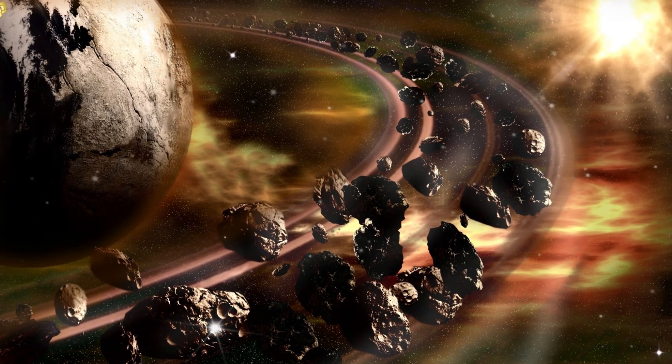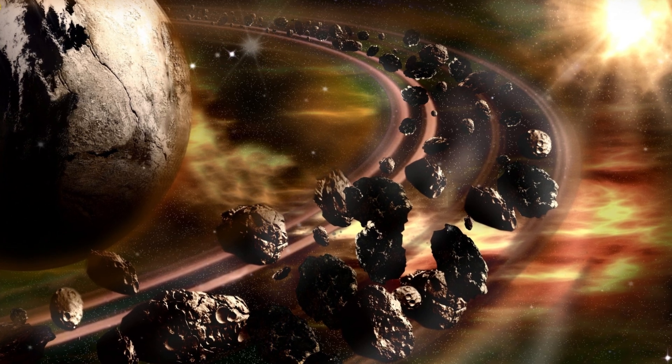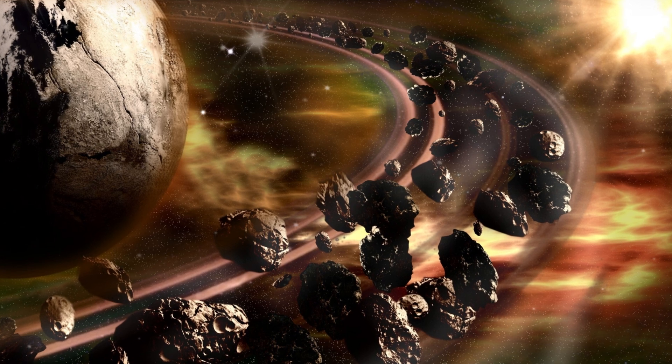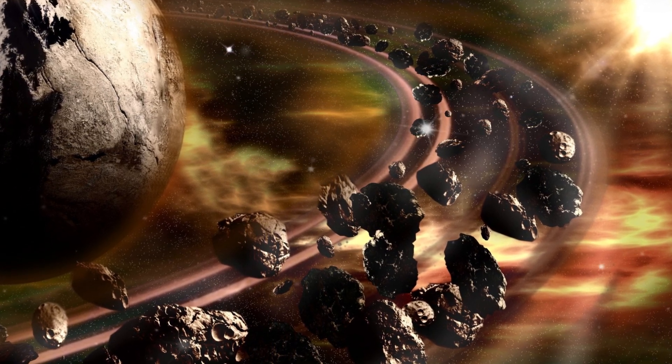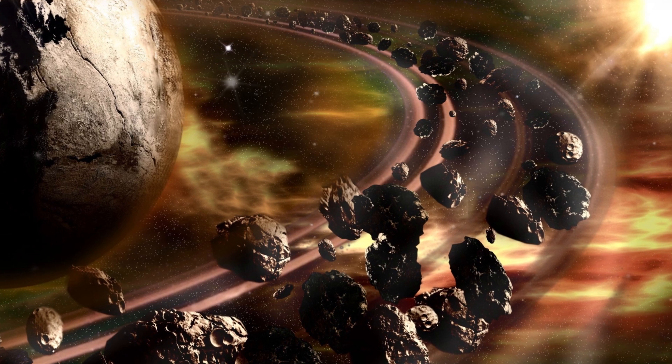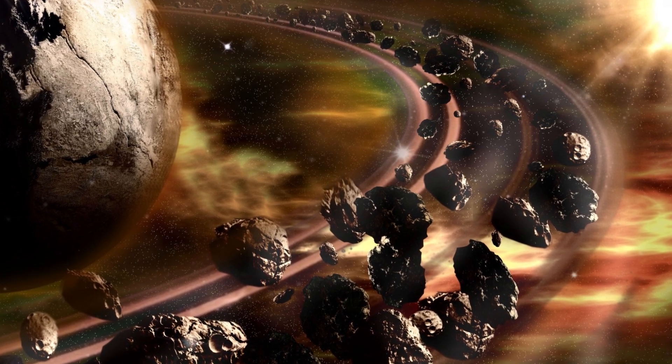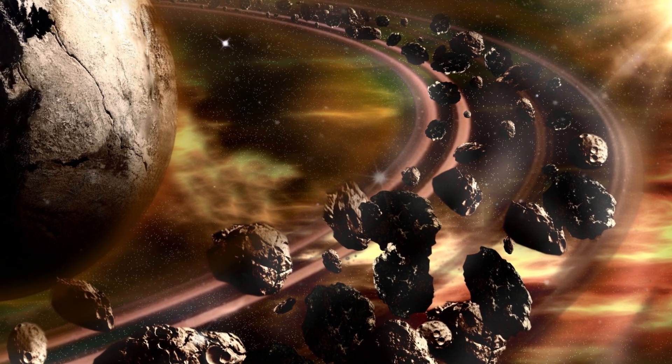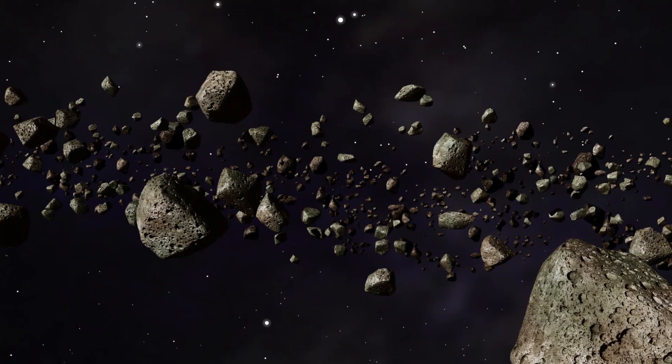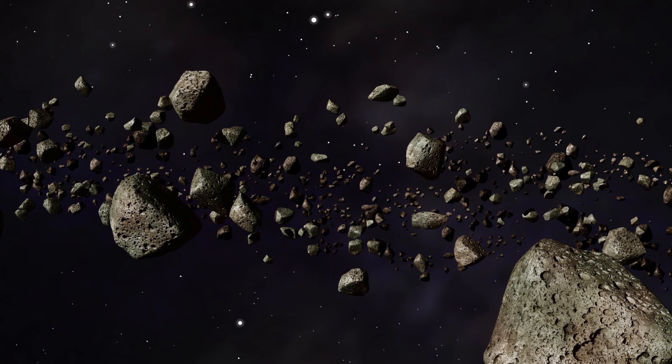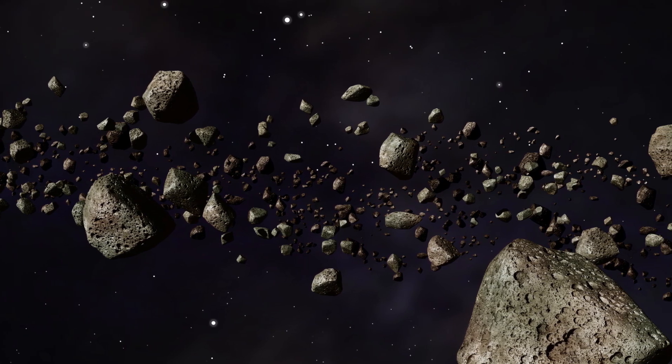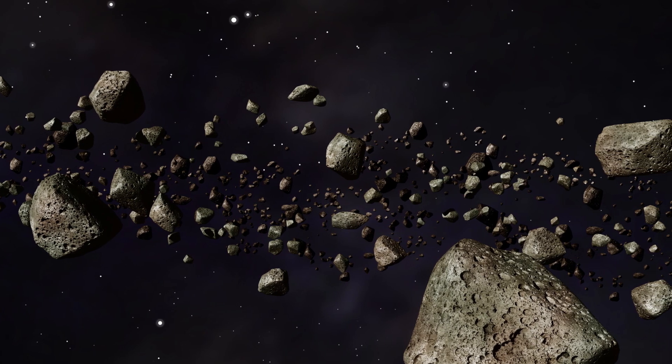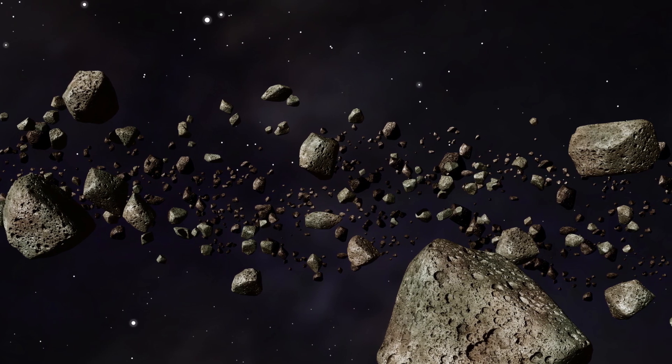The findings revealed that the belts around Fomalhaut are vastly different and more complex than those in our own solar system. Fomalhaut possesses three nested asteroid belts extending up to 23 billion kilometers from the star, far exceeding the size of our own asteroid belt. These belts are the remnants of colliding bodies and indicate the presence of young, unseen planets responsible for shaping and gathering material into these belts.